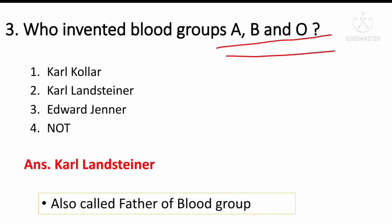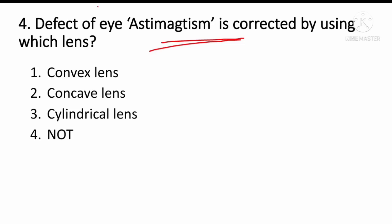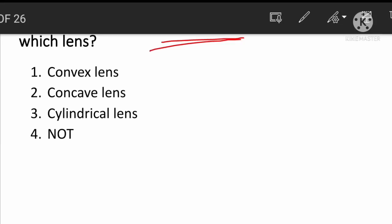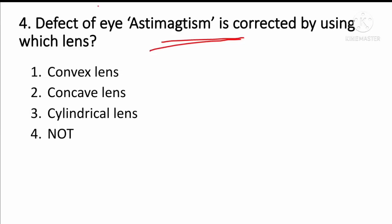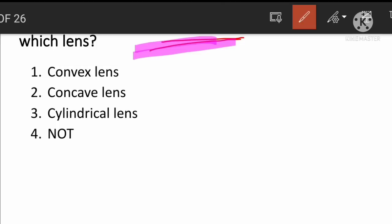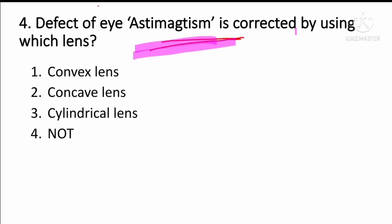Eye defect astigmatism is corrected by using which lens? Options include myopia and hypermetropia lenses. The answer relates to the correction of astigmatism.